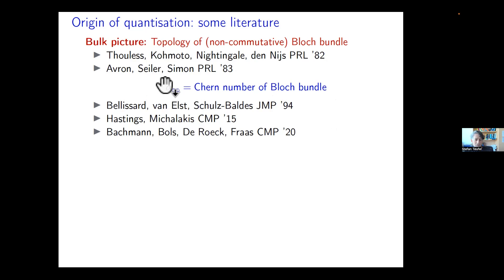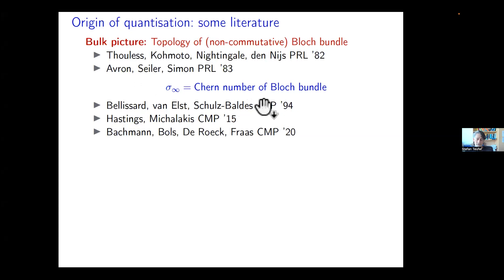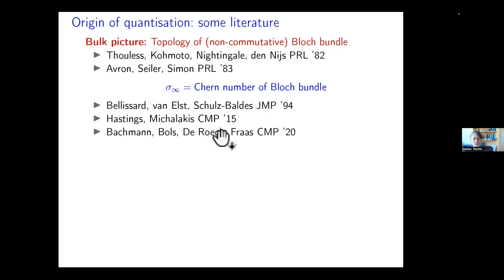Bellissard and Schulz-Baldes generalized this view to random ergodic systems. More recently, Hastings-Michalakis and Bachmann-Bols-De Roeck-Fraas proved the quantization of the bulk Hall conductivity for certain models of interacting fermions.